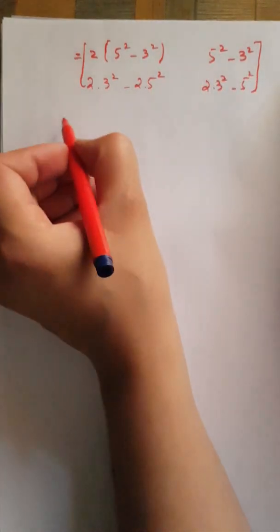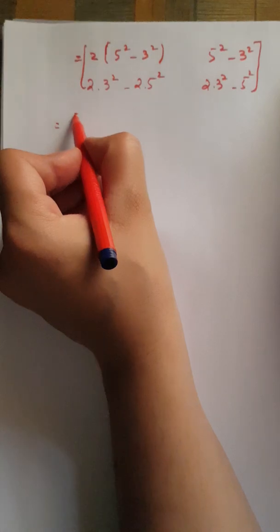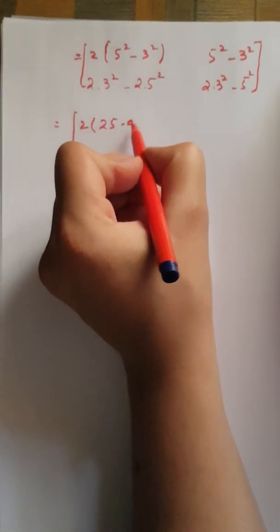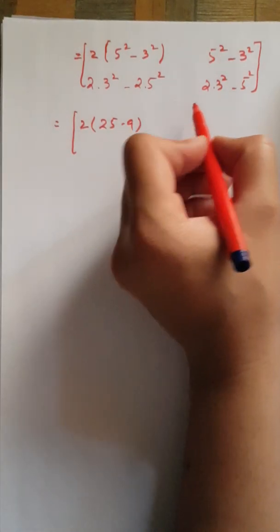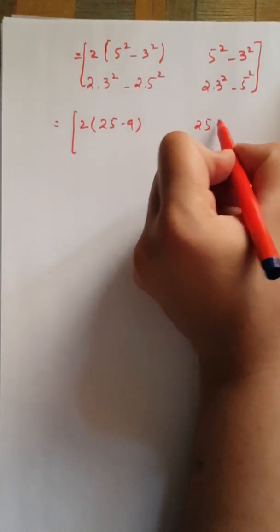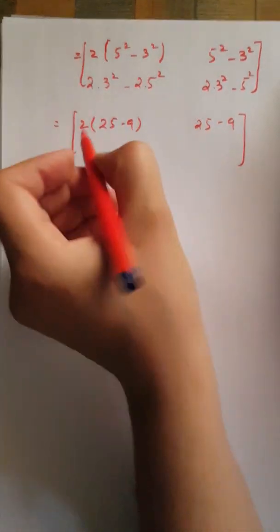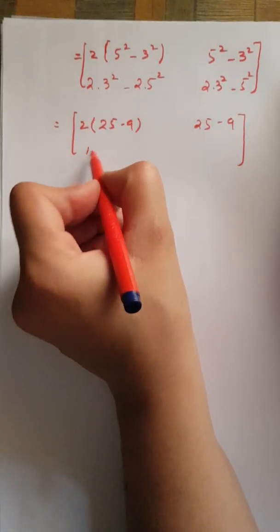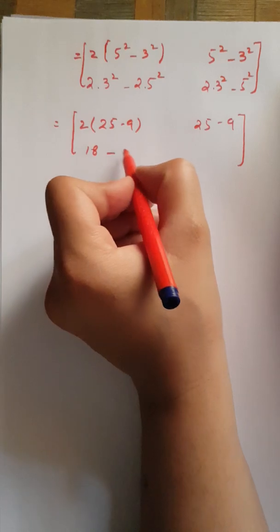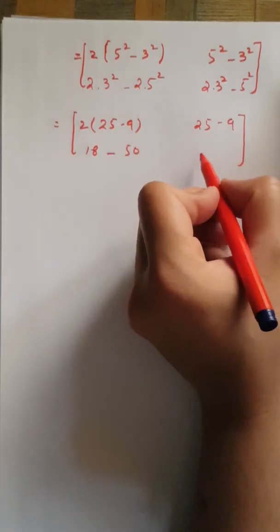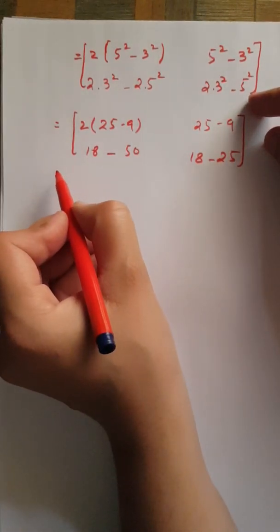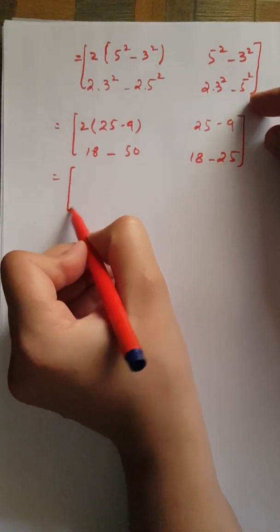On further simplification, you will get 2(25 - 9), then 25 - 9, then 18 - 50, and 18 - 25. So in this way you can simply compute the higher powers of A.